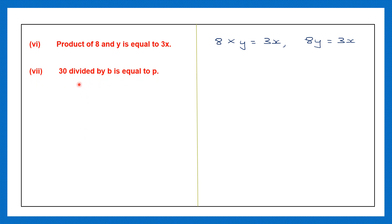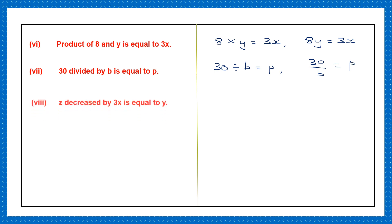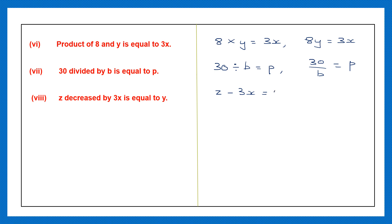Question 7: 30 divided by b is equal to p. So let's write that: 30 divided by b is equal to p. Another way of writing this is 30 over b is equal to p. Question 8: z decreased by 3x — that means z minus 3x is equal to y.